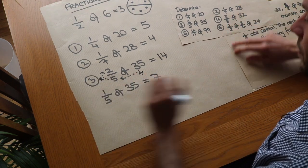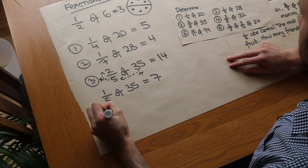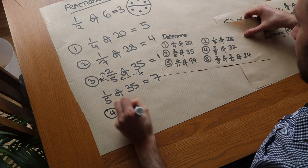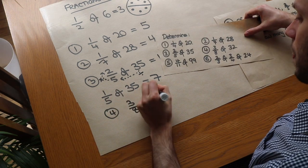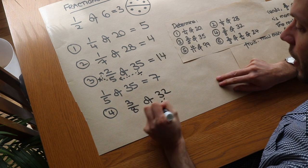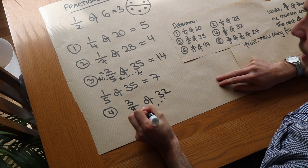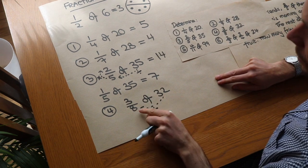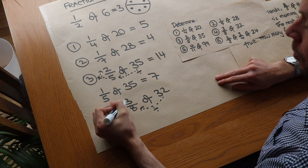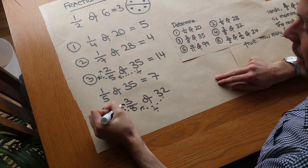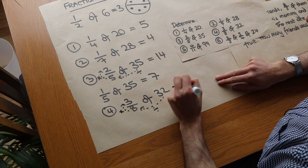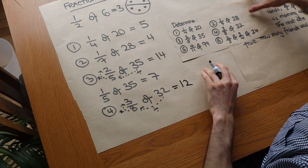Let's do another example: three eighths of 32. We divide 32 by the denominator, which gives us 4, and then 4 multiplied by 3 gives you 12. So the answer would be 12.